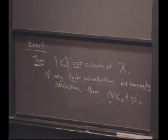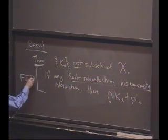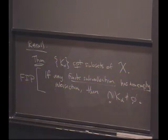So, this is what's known as the finite intersection property. Sometimes, we'll just abbreviate this by FIP, the finite intersection property. And it's true for any collection of compact subsets of X. And we proved that last time.